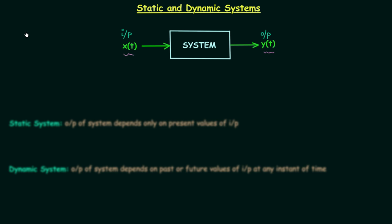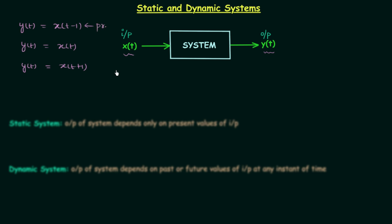To understand past, present, and future input, let's take three cases. In case 1, y(t) = x(t−1). In case 2, y(t) = x(t). In case 3, y(t) = x(t+1). The first case has the output y(t) dependent on the past input. The second case depends on the present input. In the last case, y(t) = x(t+1), the output is dependent on the future input.